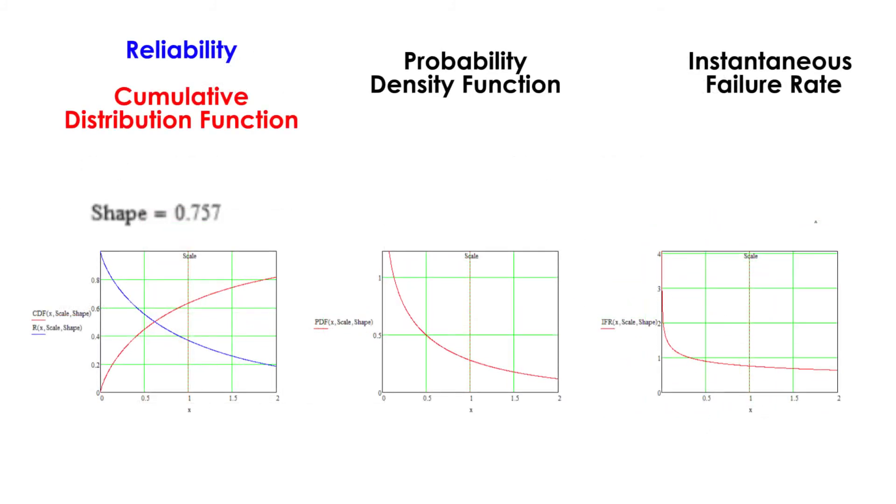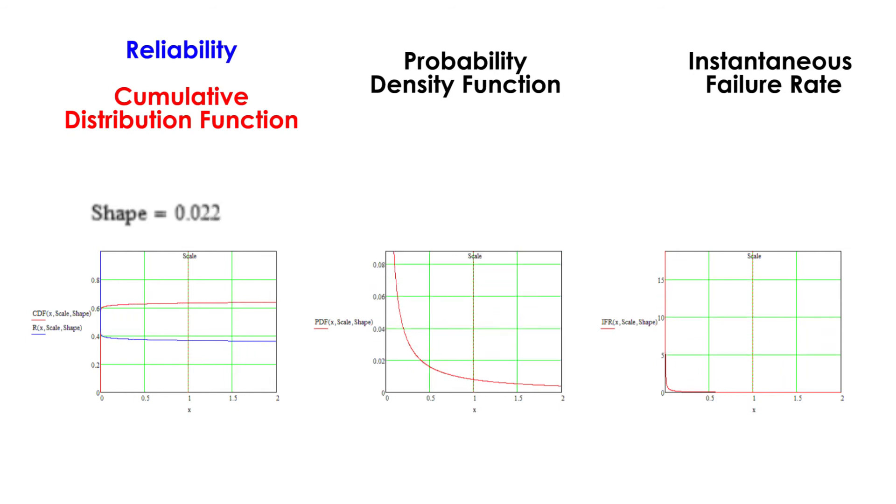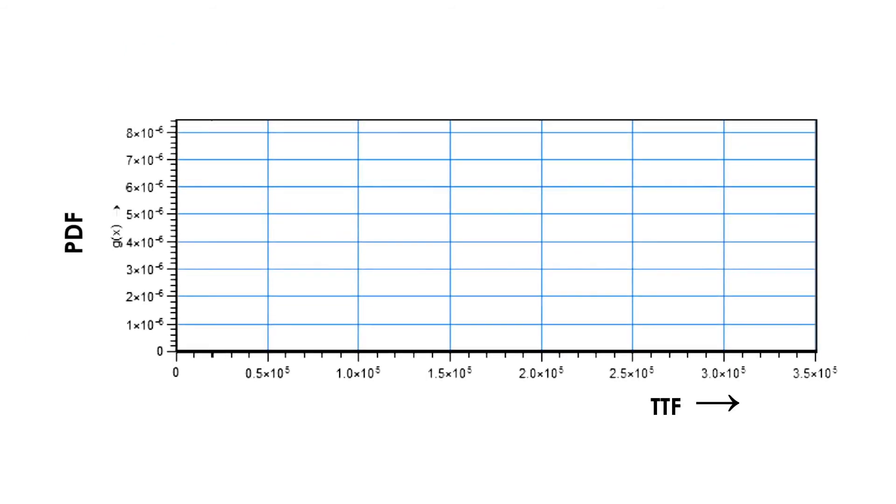The lower we set the Weibull shape, the more conservative will be the calculation, so we really only need to set its lower bound.